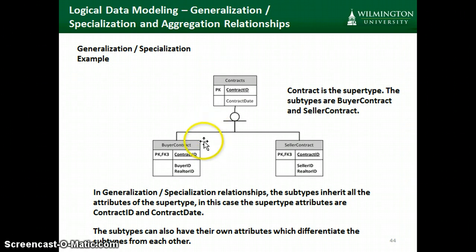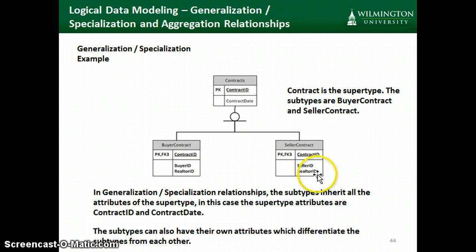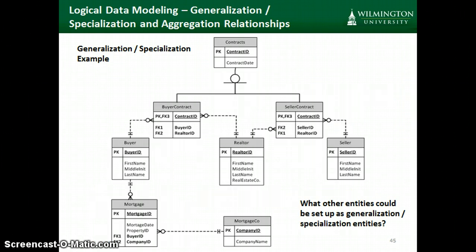The reason we might want to do this is our buyer contracts and our seller contracts might have some attributes in common, like the contract date. When that happens, we put that in the entity that's the supertype. And they might have some attributes that are unique to the type of contract, like who the buyer is and who the realtor is representing the buyer, who the seller is and who the realtor is representing the seller. You'll notice in both of these, we have an attribute called realtor ID, but they really mean two different realtors — in one case, the realtor for the buyer, and in the other, the realtor for the seller. So our previous entity relationship diagram could be redrawn as shown here.